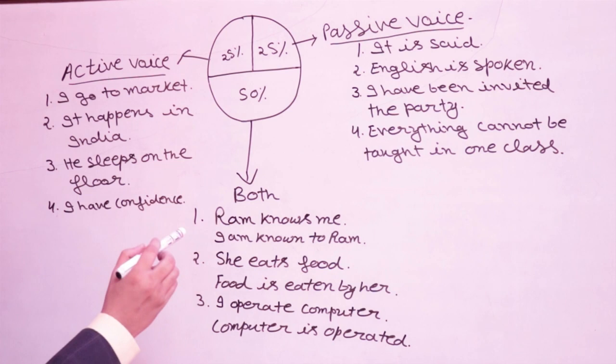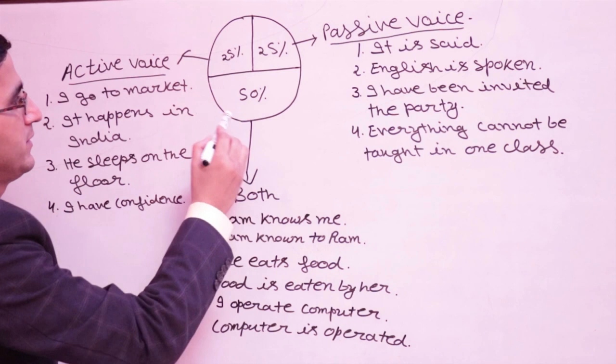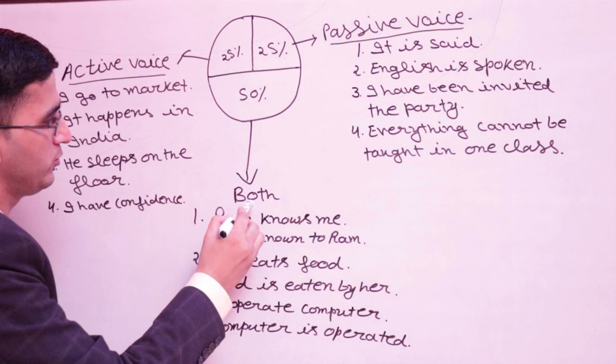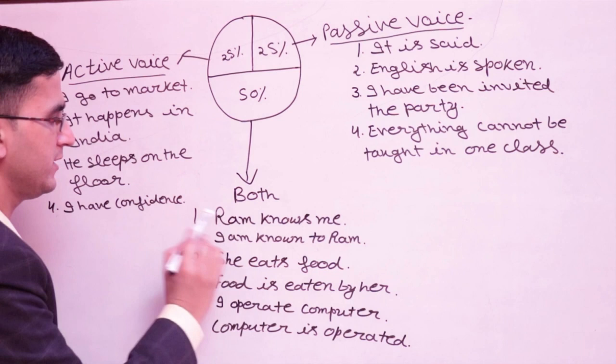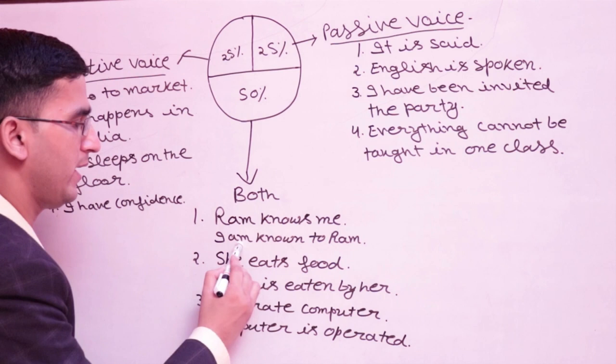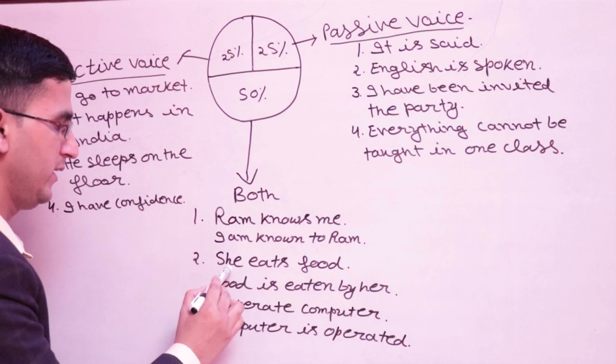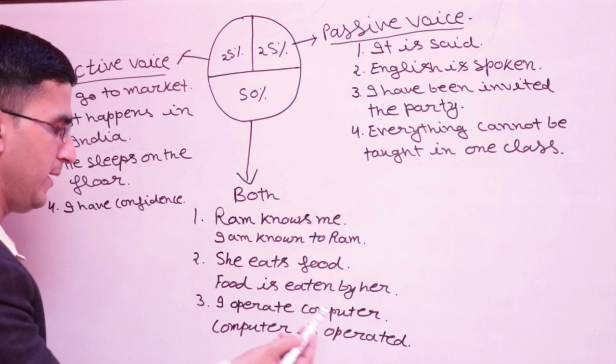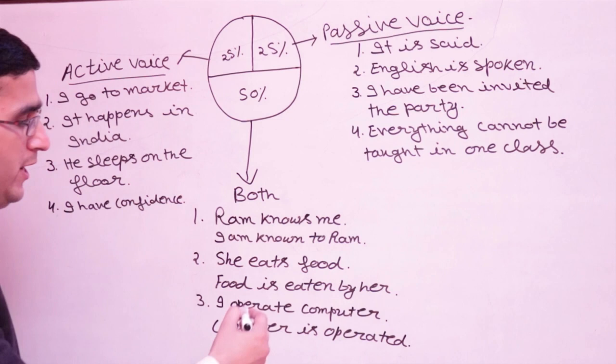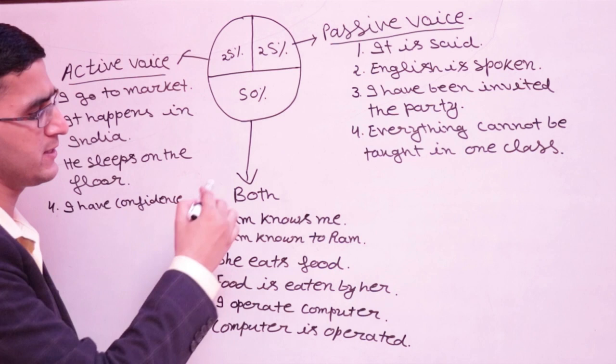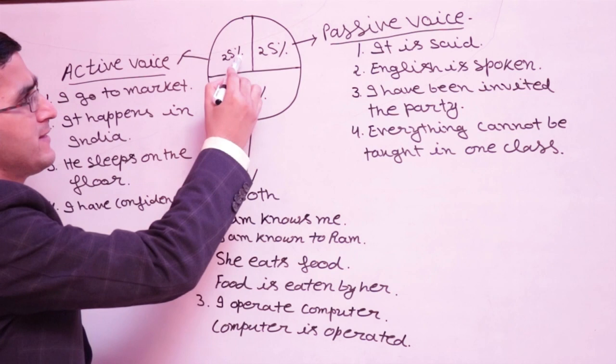Here is a very important pie chart. 50 percent of sentences can be used in both active and passive voice — you have options. For example: 'Ram knows me' and 'I am known to Ram' — both are correct and have the same meaning. 'She eats food' → 'Food is eaten by her.' 'I operate a computer' → 'A computer is operated by me.' You can use either form.